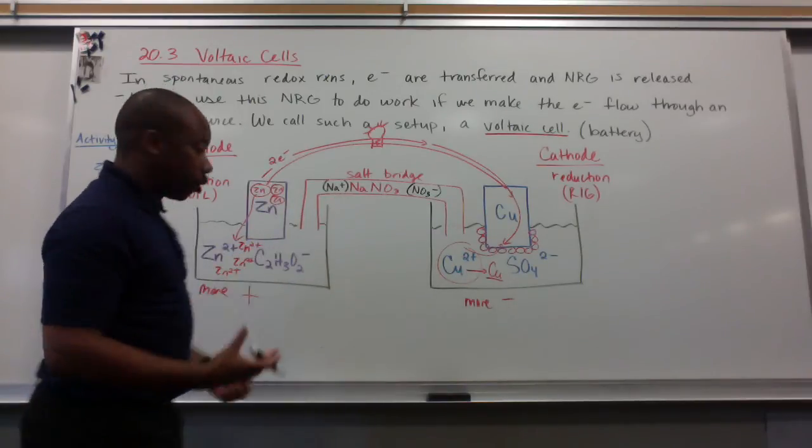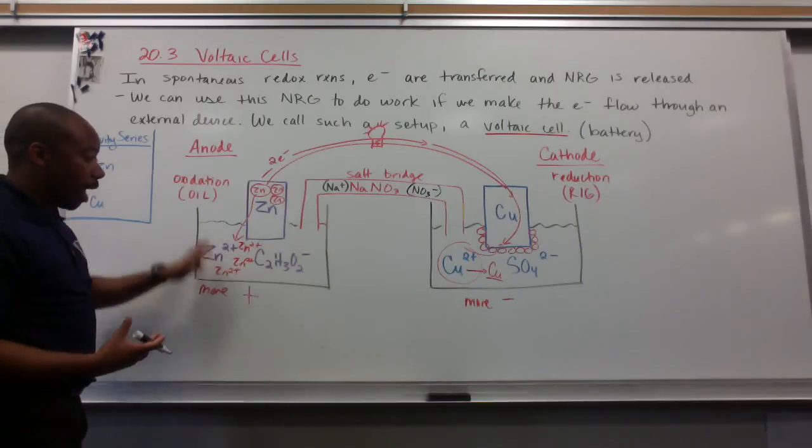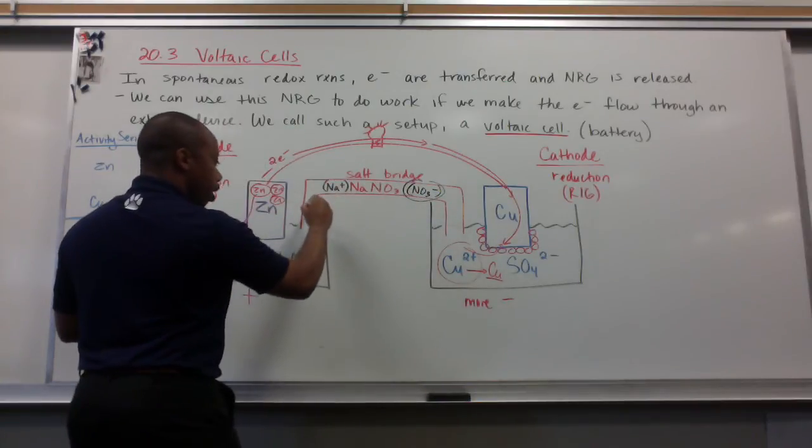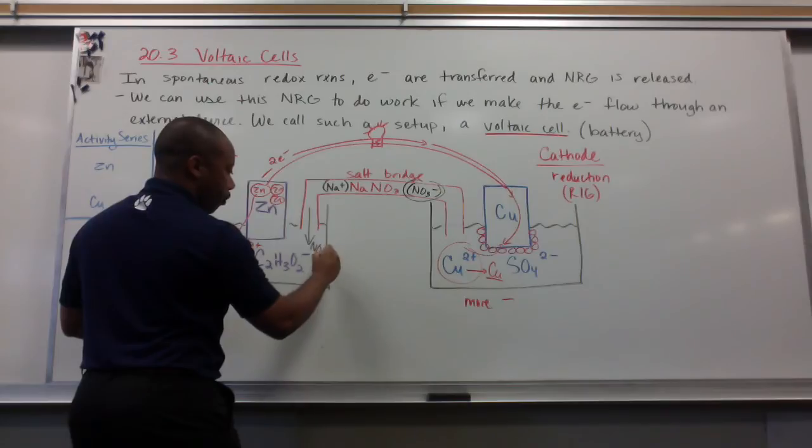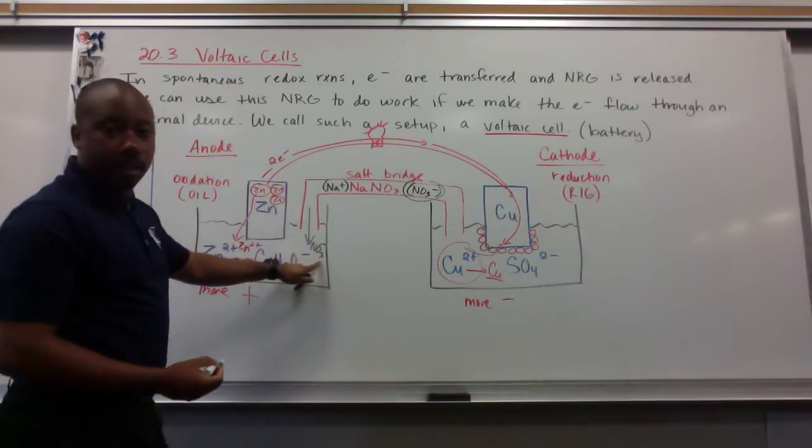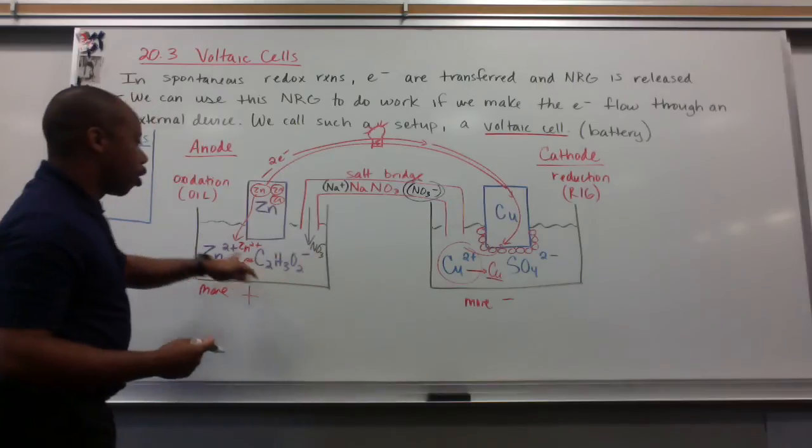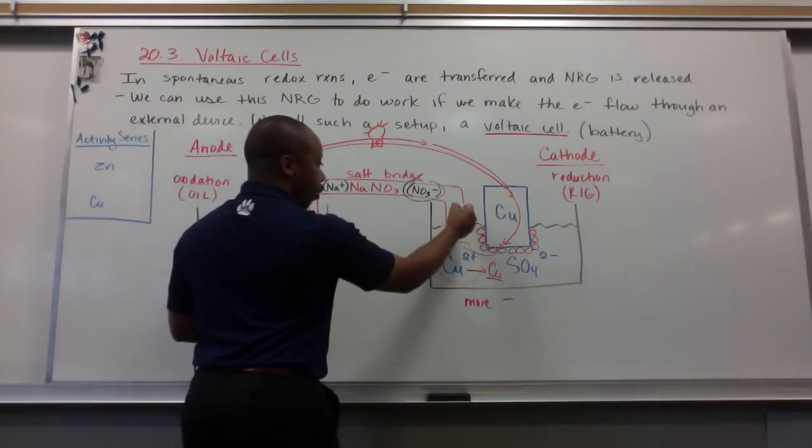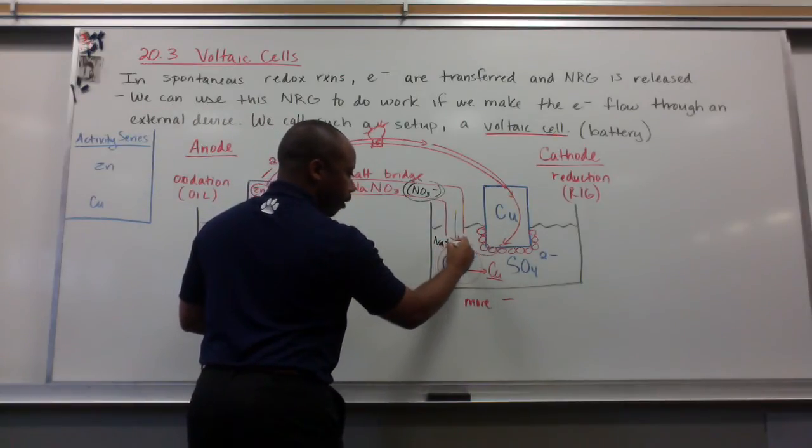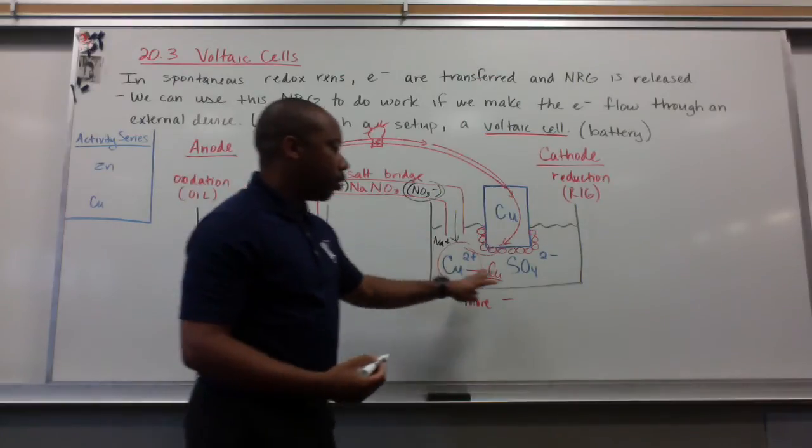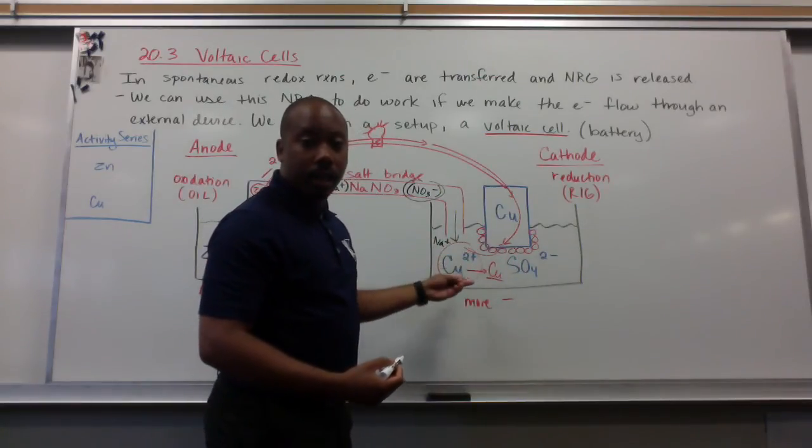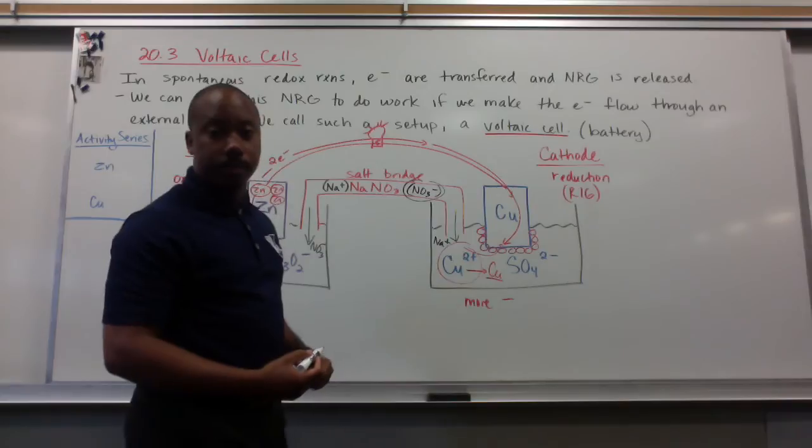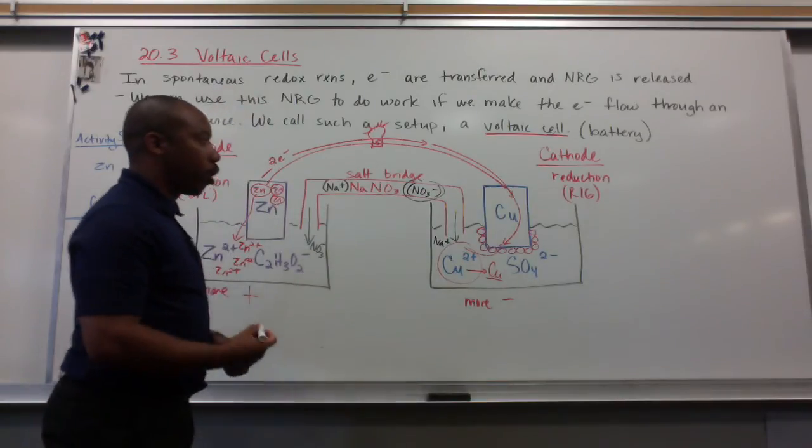The negative ions would go where there needs to be more negative. The positive will go where there needs to be more positive charge. So here, we're deficient of negative charge. Because we have a growing positive charge. So the negative charge will flow through this U-tube and go down here. So I'll get more NO3 minus in this side to balance out the charge, the increasing charge of zinc 2 plus. And I have Na plus going on this side to balance out the depleting Cu 2 plus charge that's leaving. So taking its place essentially. So that salt bridge restores charge balance.